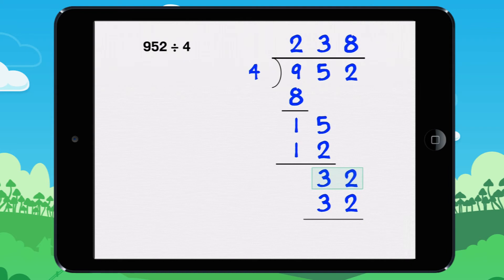We need to find the remainder. 32 minus 32 equals 0. The remainder is 0. There are no more digits to divide. The division is finished.